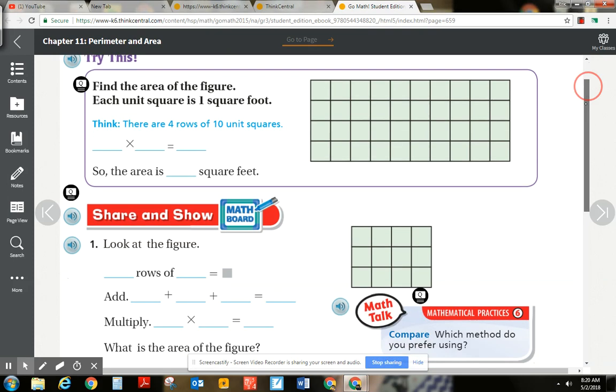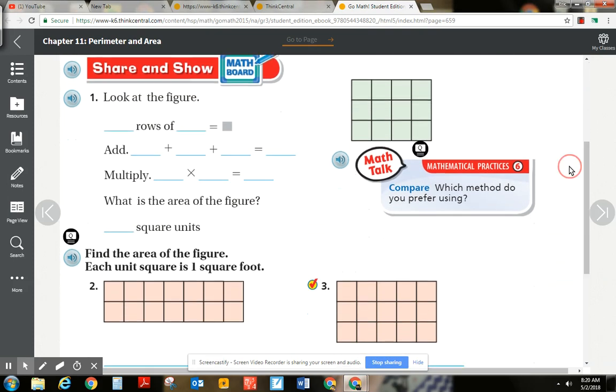All right. A couple more. Then I'll finish up. So here's this problem. And there's a whole bunch of blanks here. So you really got to be careful about reading the directions, just like always. So look at the figure. We're talking about this figure right here. How many rows are there? There's one, two, three rows.